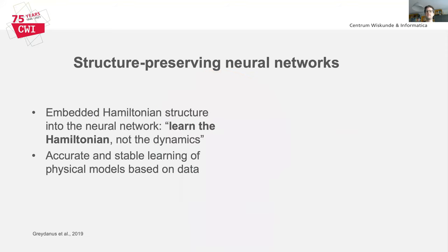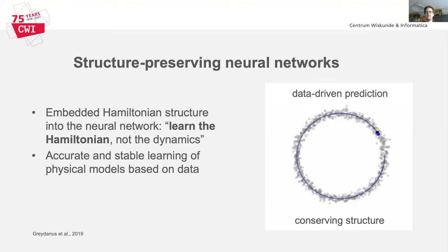Going back to the data-driven example shown before, where we have noisy observations of a mass-spring system and the neural network prediction that diverges from the circular orbit — we now change the neural network architecture so that we learn the Hamiltonian of the system. This enforces that the Hamiltonian is conserved and leads to accurate and stable predictions, as you can see here in blue. Our first results indicate that these networks are less sensitive to perturbations, they need less training data, and they lead to physically realistic solutions.